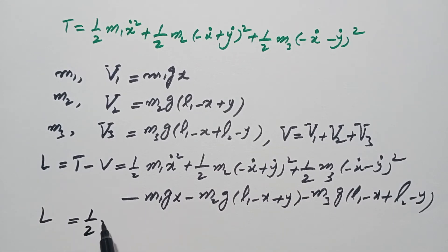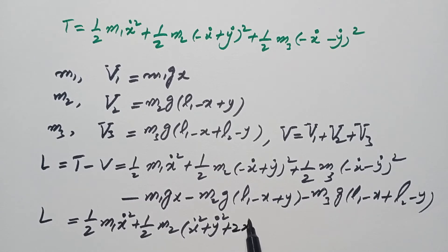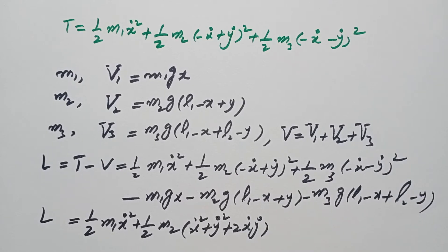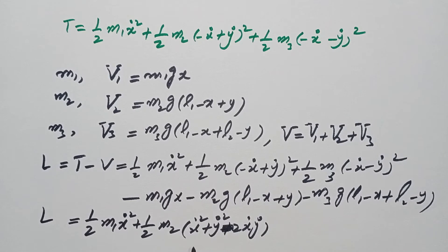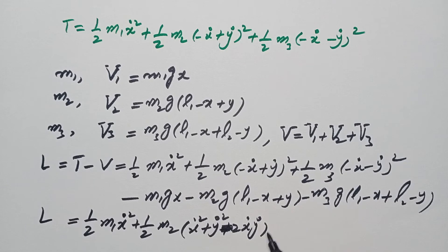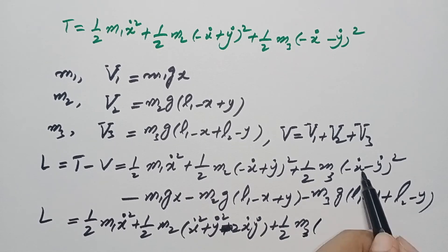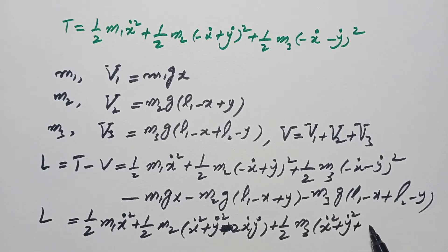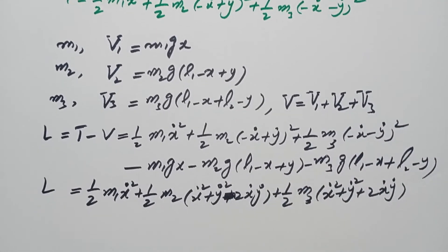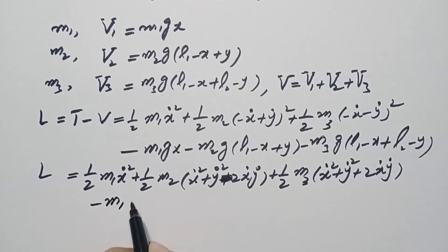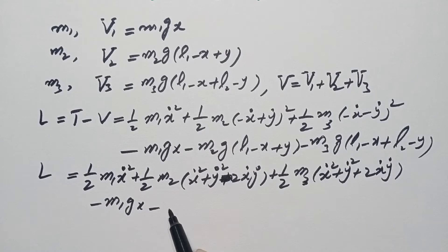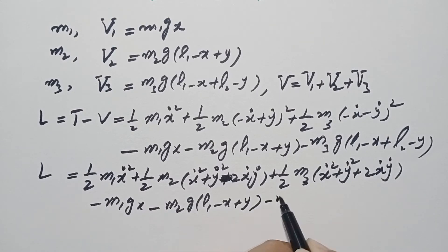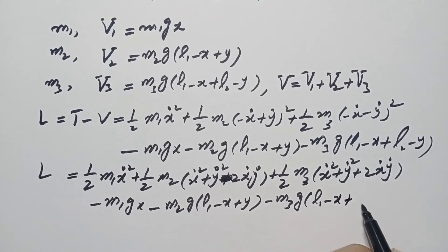We can simplify this Lagrangian by opening the squares. The Lagrangian becomes: ½m1ẋ² + ½m2(ẋ² + ẏ² − 2ẋẏ) + ½m3(ẋ² + ẏ² + 2ẋẏ) minus the potential energy terms: −m1g·x − m2g(l1 − x + y) − m3g(l1 − x + l2 − y).